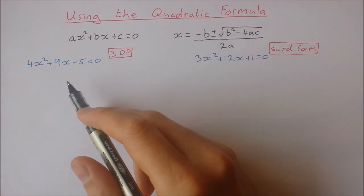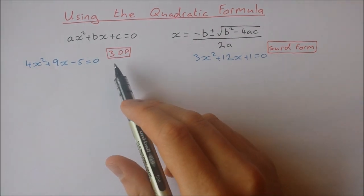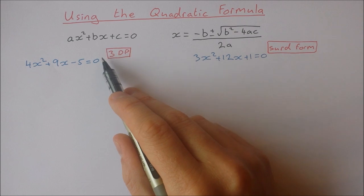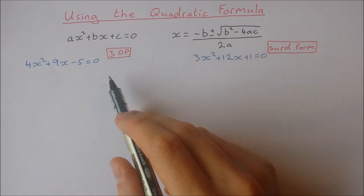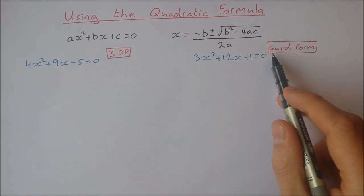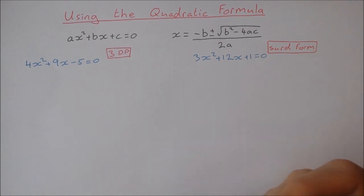So I have two examples here and they're just going to be slightly different in the sense that the first example I'm going to give the answer correct to three decimal places and in the second example I'm going to give the answer in surd form. You can be asked either one any time.